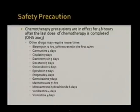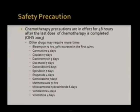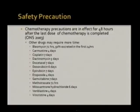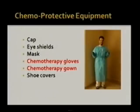Our hospital policy states that any patient who is on chemotherapy or starting chemotherapy should be on chemotherapy precautions for 48 hours after the last dose is finished. This is also one of the Oncology Nursing Society's recommendations. You have a list of some drugs that can stay in body fluids for more than 48 hours; here we stick with 48 hours, as most drug metabolites are excreted within the first 48 hours. Some institutions follow safe handling timing depending on the drug — that depends on your institution's policies and procedures.